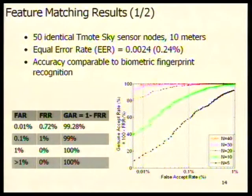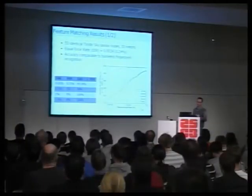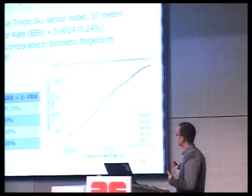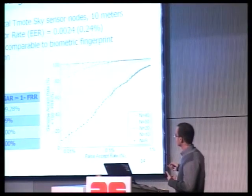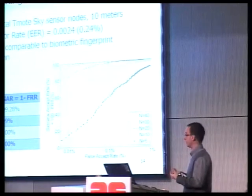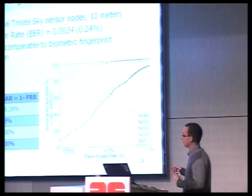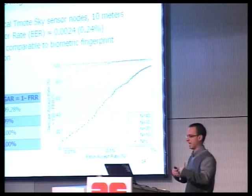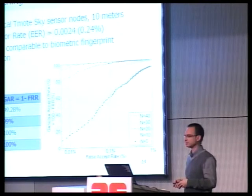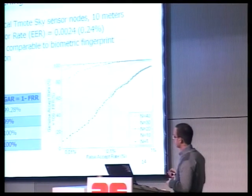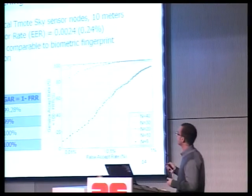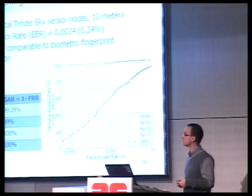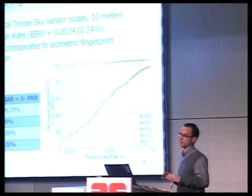This graph shows the false accept rate and genuine accept rate versus the number of signals used to extract features. If you use more signals — like 40 packet transmissions — you get the highest accuracy. Using fewer signals causes accuracy to drop significantly, due to more noise. The more you average over multiple samples, the better the performance. These results are comparable to biometric fingerprint recognition, with an equal error rate of around 0.24% — even on identical hardware, same model devices.